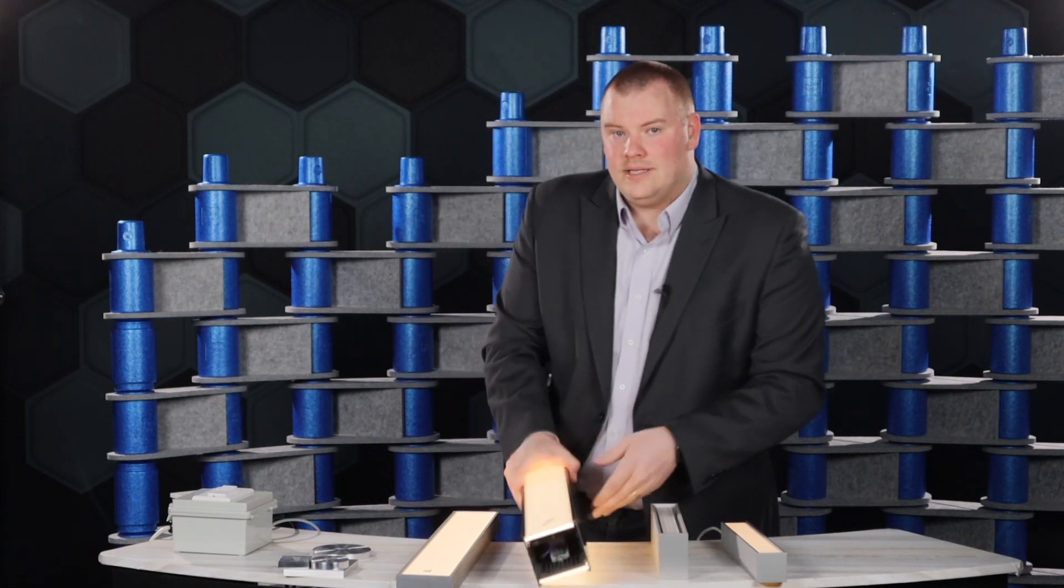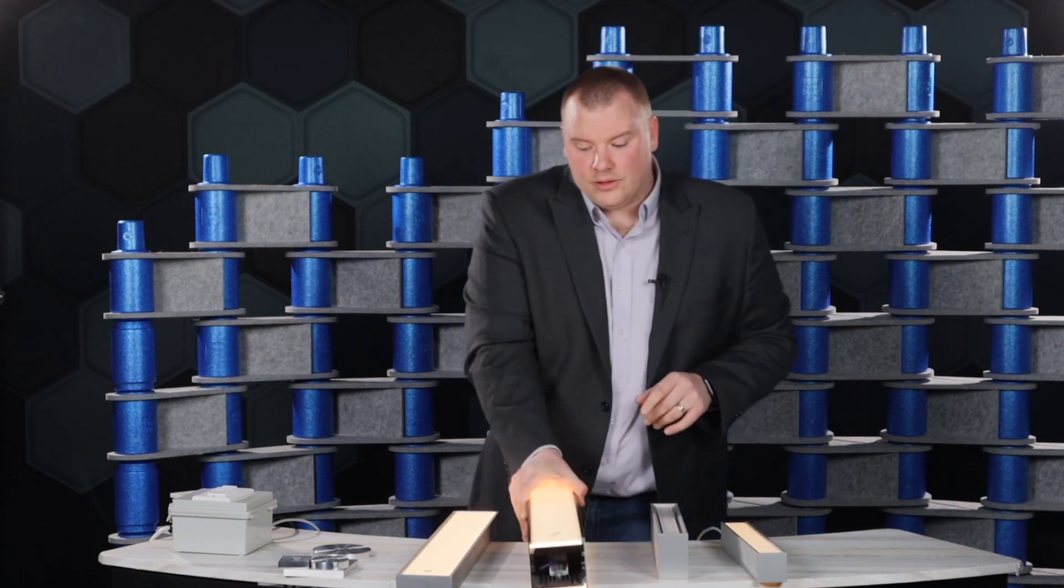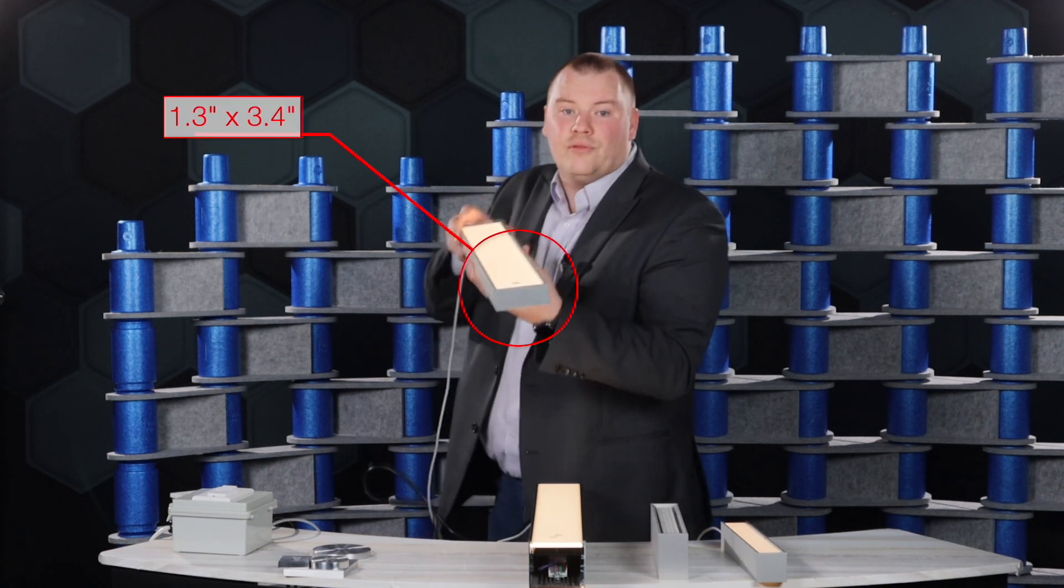The Huntington 3 is a 3.4 by 3.4 square with an integral driver, and we could do this as shallow as 1.3 inches height with a remote driver option.